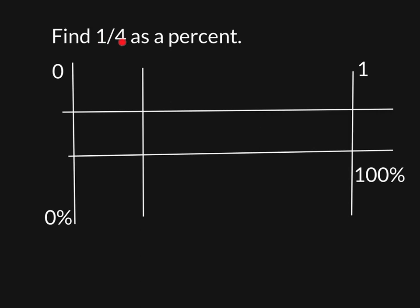Alright, what we're trying to do right now is find one-fourth as a percent. You can see this double number line. We've got zero here and zero percent down here, and one over here that goes with a hundred percent right there. And these are always going to be the same every time we're trying to find a percent with a double number line.